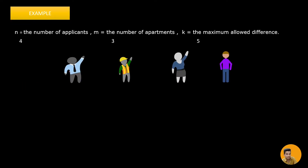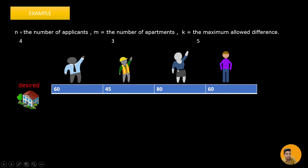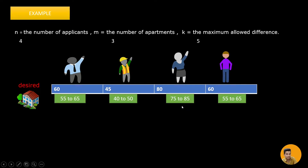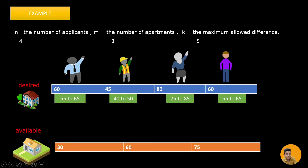There are four applicants with desired house sizes of 60, 45, 80, and 60. They can accept a house if it lies within the maximum allowed difference — so for a desired size of 60, they'll accept anything from 55 to 65. The three available apartments have sizes 30, 60, and 75.